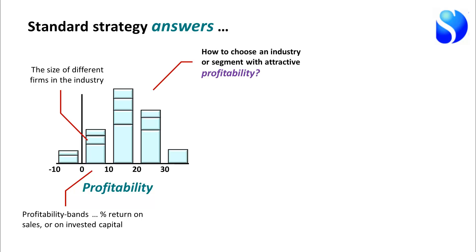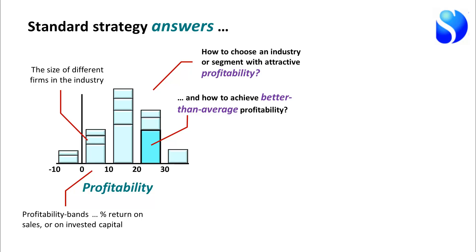So the standard strategy tools for looking at the attractiveness of an industry or a segment within an industry are essentially giving you that picture — is this industry or segment one in which it's possible to make high rates of profitability, or do competitive conditions mean that it's actually very difficult to make high rates of profitability and quite easy to lose money? That's telling you about the industry or the segment itself. The other standard strategy tools then come into play to help you understand how to achieve a better than average profitability. So in the highlighted position there, you are both a reasonably substantial business and your profitability is higher than the average.